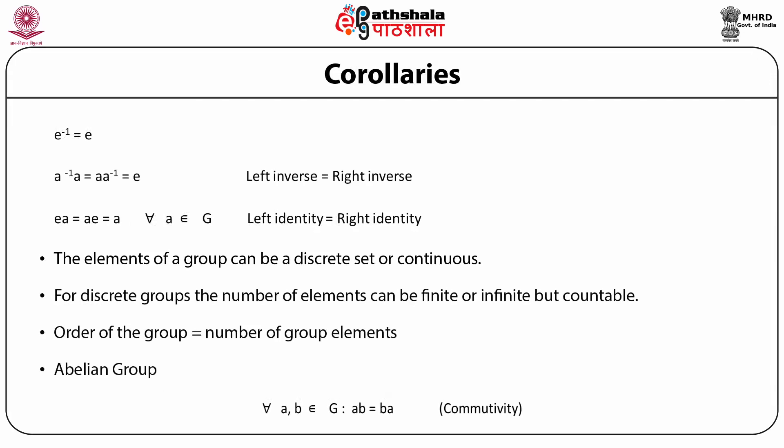There are certain corollaries which follow from the definitions of a group, that is from the axioms. The property of closure between two elements A and B equally applies when B equals A. Thus, for any A belonging to G, A·A = A², which also belongs to G, and A³, A⁴, etc., all belong to G.